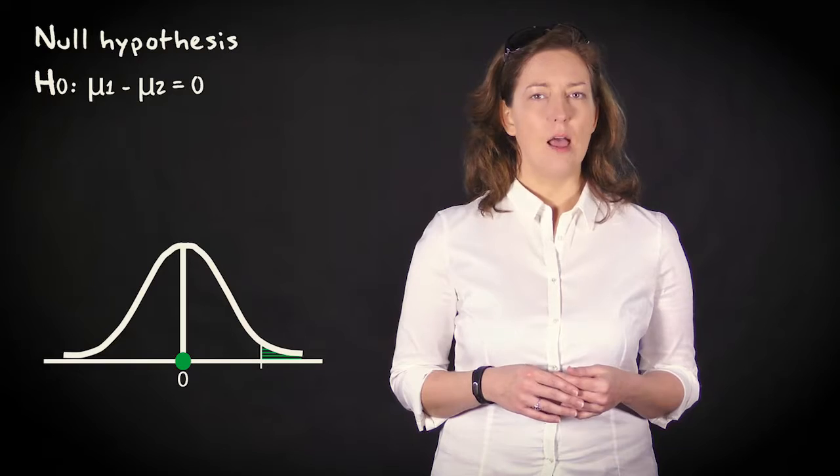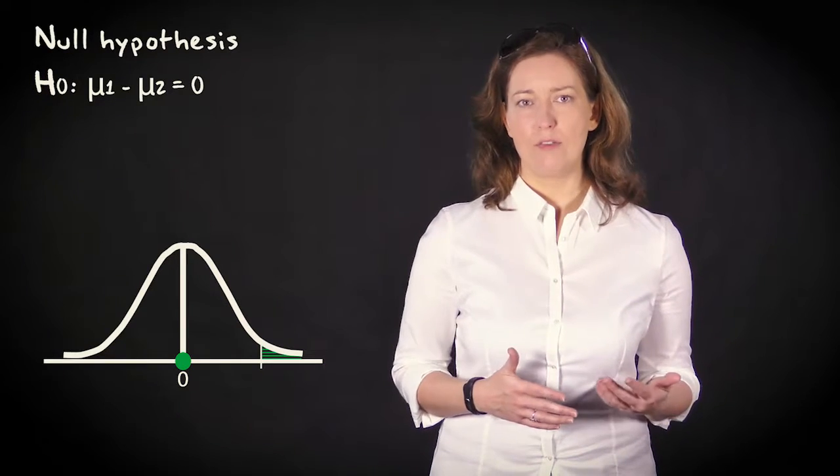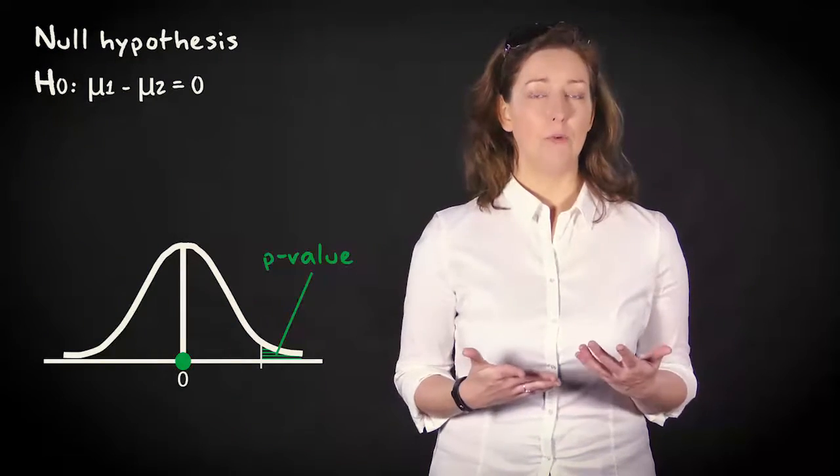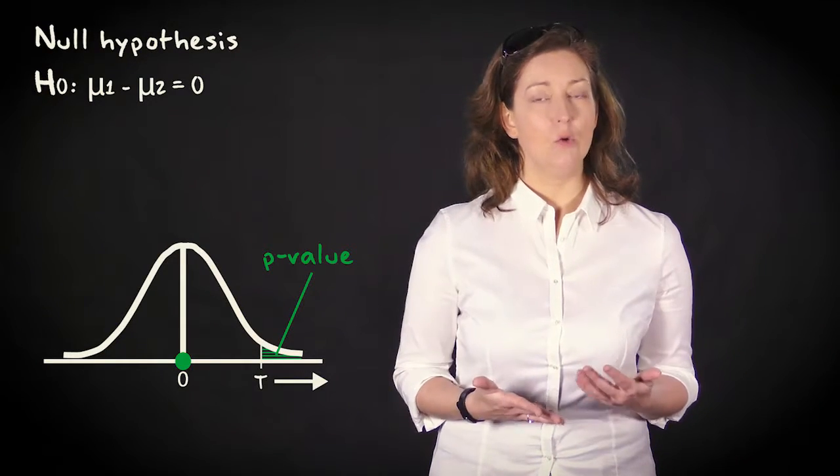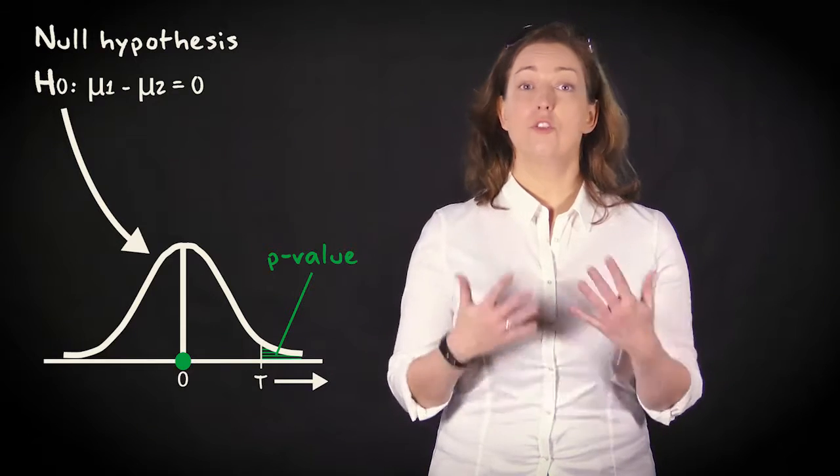Once we specify a null hypothesis and an alternative hypothesis, we can calculate the p-value. This is the probability that we'll find the same test statistic or a more extreme value, assuming that the null hypothesis is true.